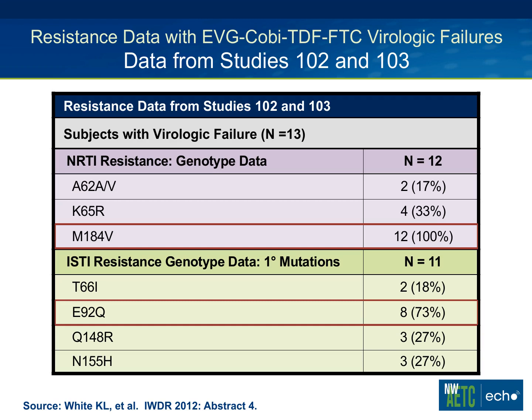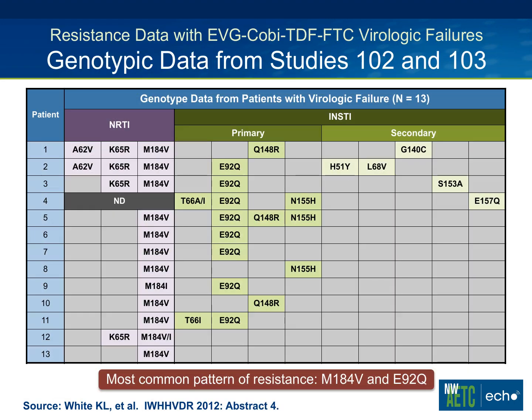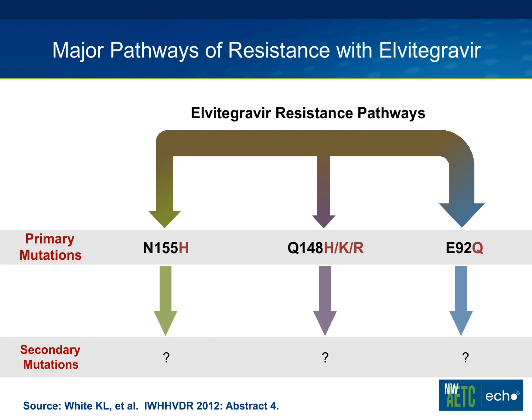When people break through on STRIBILD, the M184V mutation is very common, and the E92Q mutation is very common — that's typically what you would expect to see. A graphic showing 13 patients who failed demonstrates that a bunch of them have both mutations when they break through. Looking at the pathways with elvitegravir: the most common pathway is E92Q. You can get the N155H, just like with raltegravir, and the Q148 — but E92Q is the signature mutation with elvitegravir. We do not yet know enough about the secondary mutations.